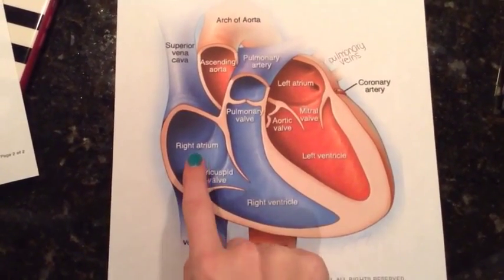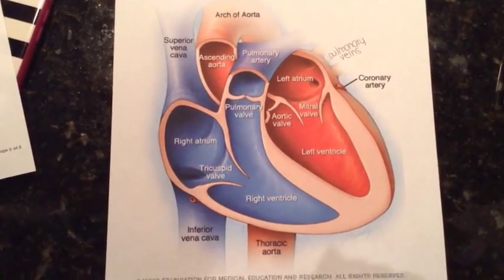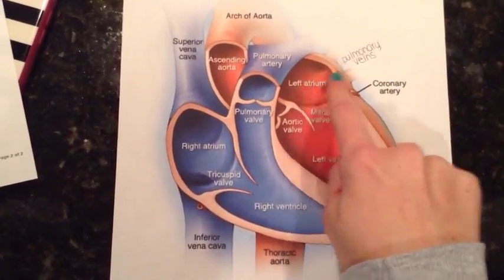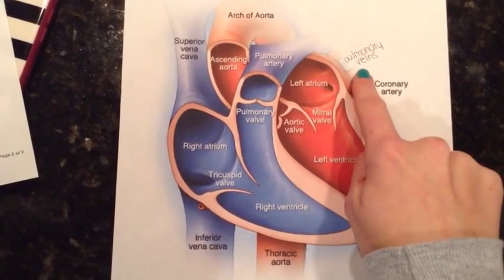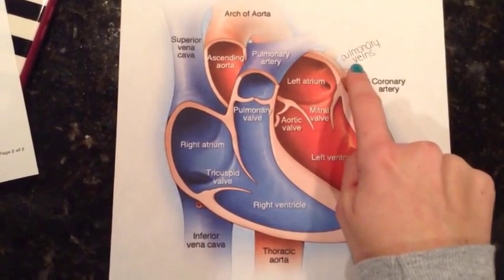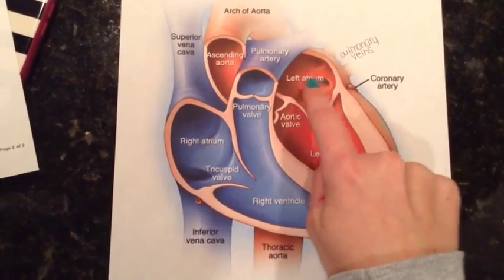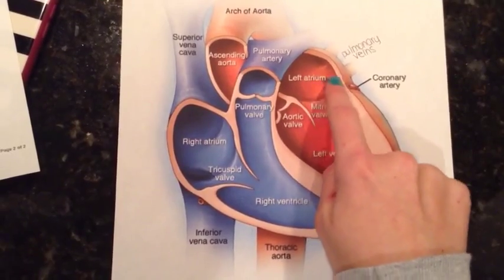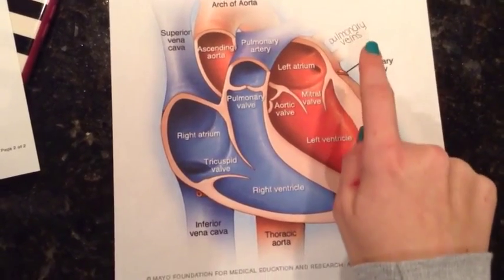The left atrium receives blood returning to the heart from the pulmonary veins. The pulmonary veins extend from the left atrium to the lungs and bring oxygen-rich blood back to the heart.